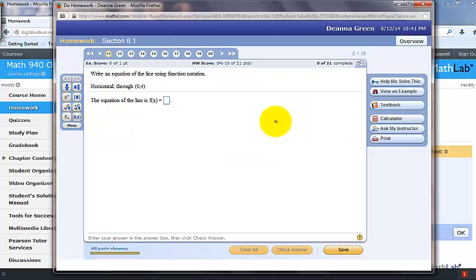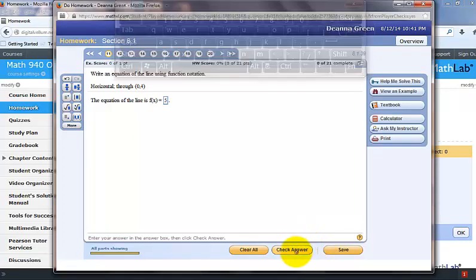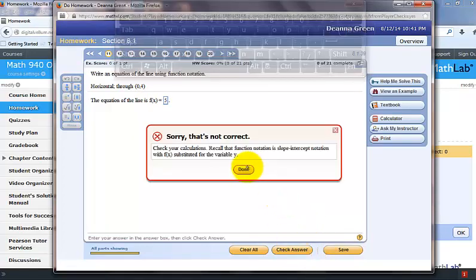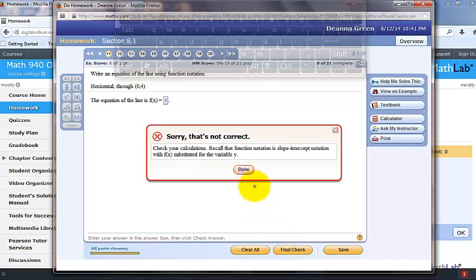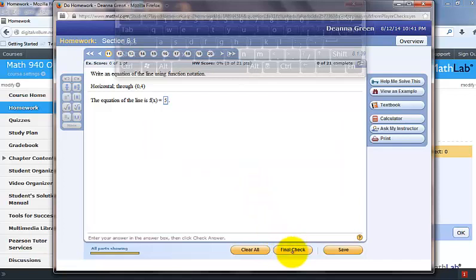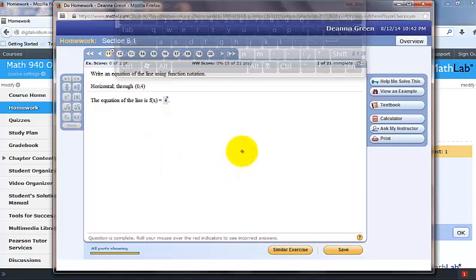I'm going to show you what happens when you get it wrong. I have three attempts to get this problem correct. I'm going to check my answer. It says nope, I'm wrong. I click Done. I check it again. It says nope, that's wrong. Click Done. Now it says Final Check. It's going to mark me wrong. It tells me the correct answer was 4, but I answered 5. Now I have a red triangle and a red X telling me I'm wrong.